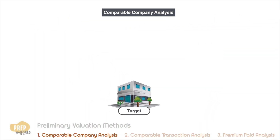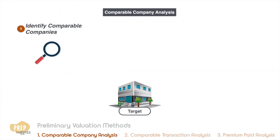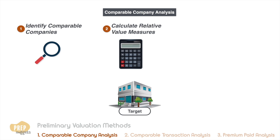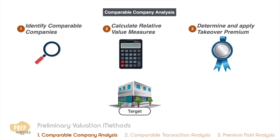In a nutshell, there are three key steps in comparable company analysis. The first is to identify the comparable companies, followed by calculating the various relative value measures of these companies to arrive at a valuation estimate for the target firm's shares. The final step is to determine an appropriate takeover premium and apply it to the valuation to arrive at the estimated takeover price for the target firm's shares.